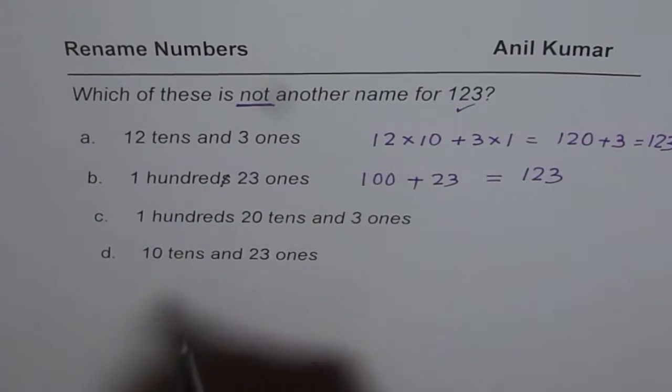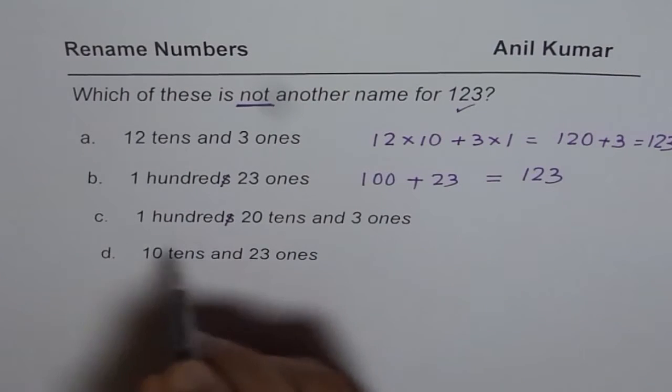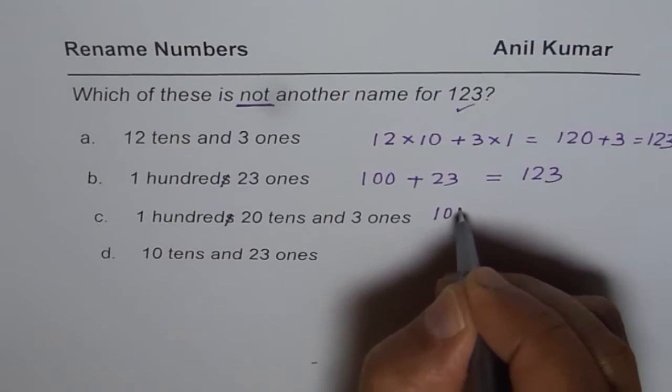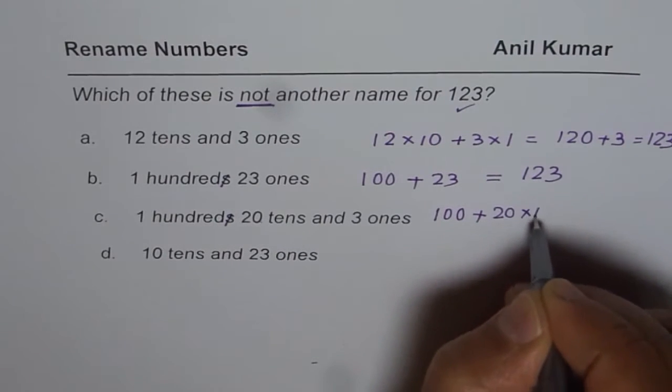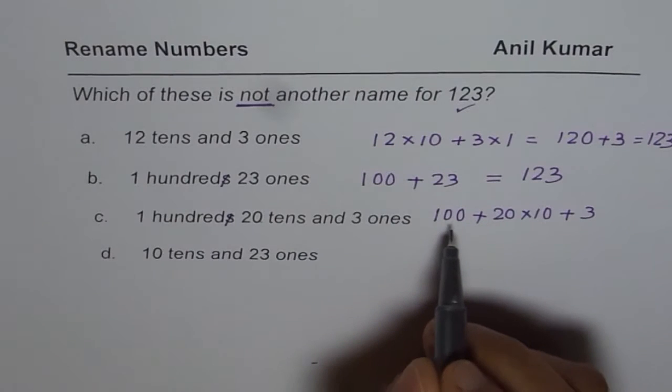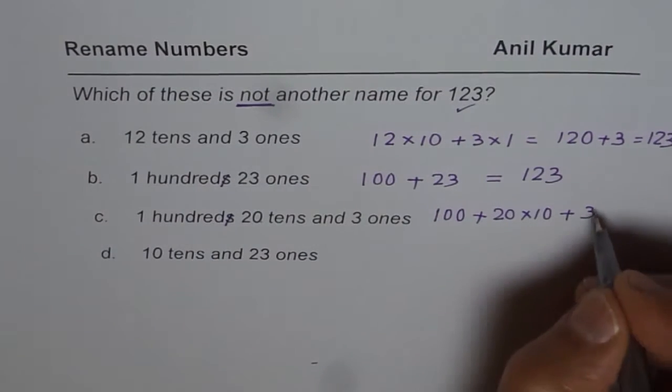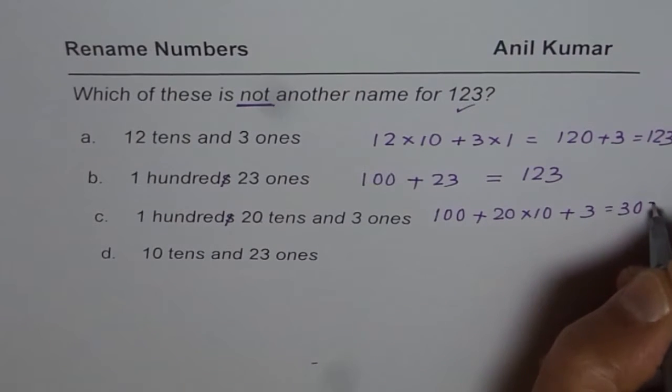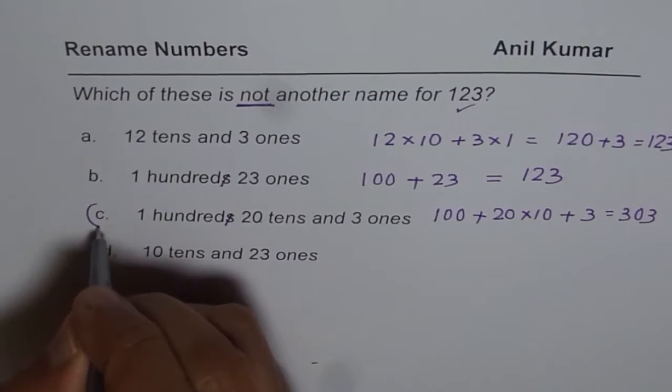Then we have 1 hundred 20 tens and 3 ones. So it is 100 plus 20 tens, means 20 times 10 plus 3. Now that means 100 plus 200. Oh my God. So 303. This is 303. So this one is not another name for 123.